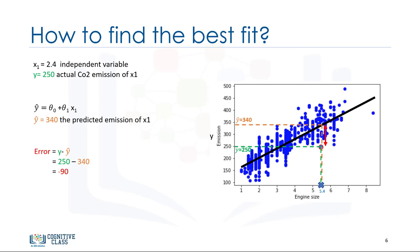So, we can say the error is the distance from the data point to the fitted regression line. The mean of all residual errors shows how poorly the line fits with the whole data set. Mathematically, it can be shown by the equation mean squared error, shown as MSE. Our objective is to find a line where the mean of all these errors is minimized. In other words, the mean error of the prediction using the fit line should be minimized.